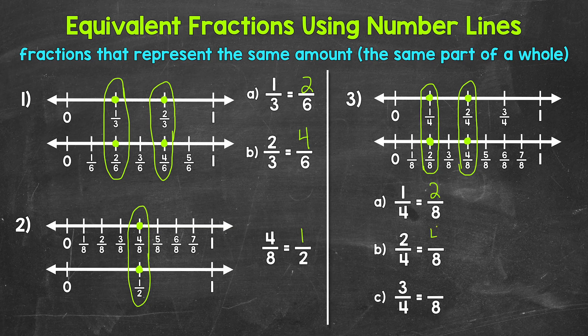And then lastly, for C, we have three fourths is equivalent to how many eighths? Three fourths is right here on the number line, and looking right below, six eighths is at the same place on the number line. Three fourths and six eighths are equivalent fractions.